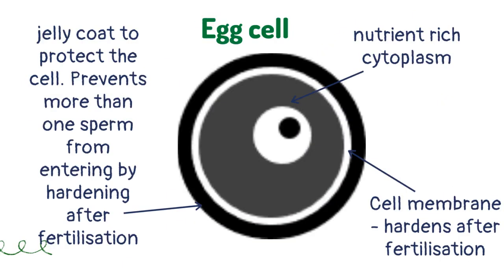The egg cell also has adaptations: a nutrient-rich cytoplasm and a protective jelly coat to prevent more than one sperm entering. To ensure that only one sperm enters the egg cell, both the jelly coating and the cell membrane harden after fertilization.